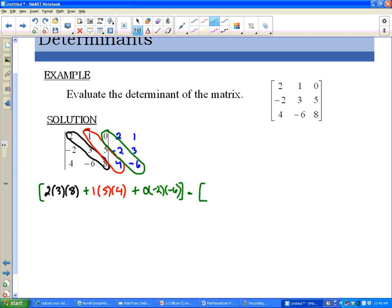Okay, so my other diagonals are 4, 3, 0 - that I promise is a zero - and then negative 6, 5, 2, and then our last diagonal 8, negative 2, 1.